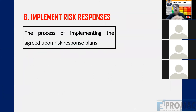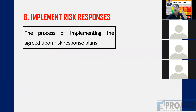All five processes so far were in the Planning process group. The sixth process moves into Execution: Implement Risk Responses. Now we actually execute — we make sure that whatever responses were planned are really being implemented.